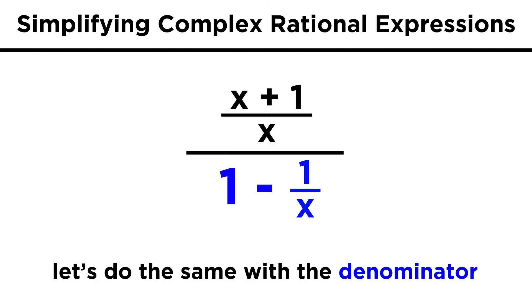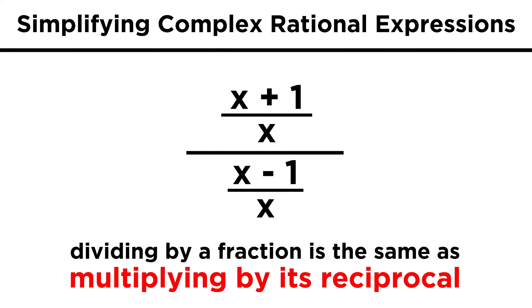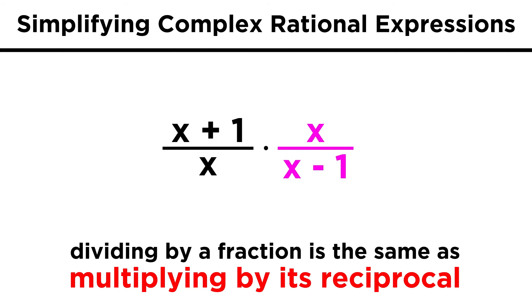Now let's do the same with the denominator. We get x over x and then subtract to get x minus one over x. Now remember, dividing by a fraction is like multiplying by the reciprocal, so let's take this whole denominator, flip it over, and bring it over here. Now we can cancel out the x's and we get x plus one over x minus one, which is definitely more aesthetically pleasing than what we started with.